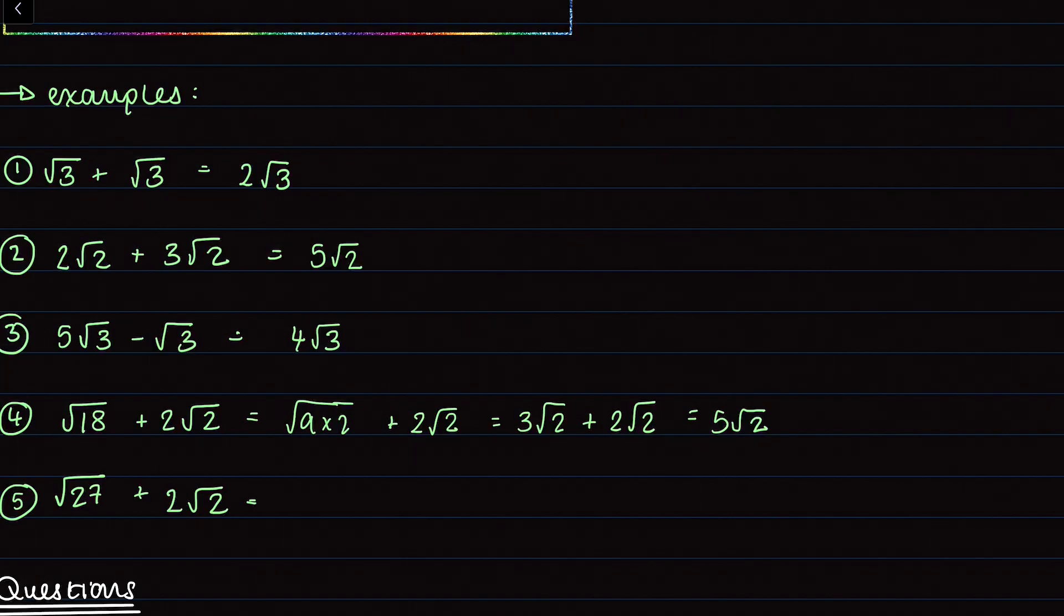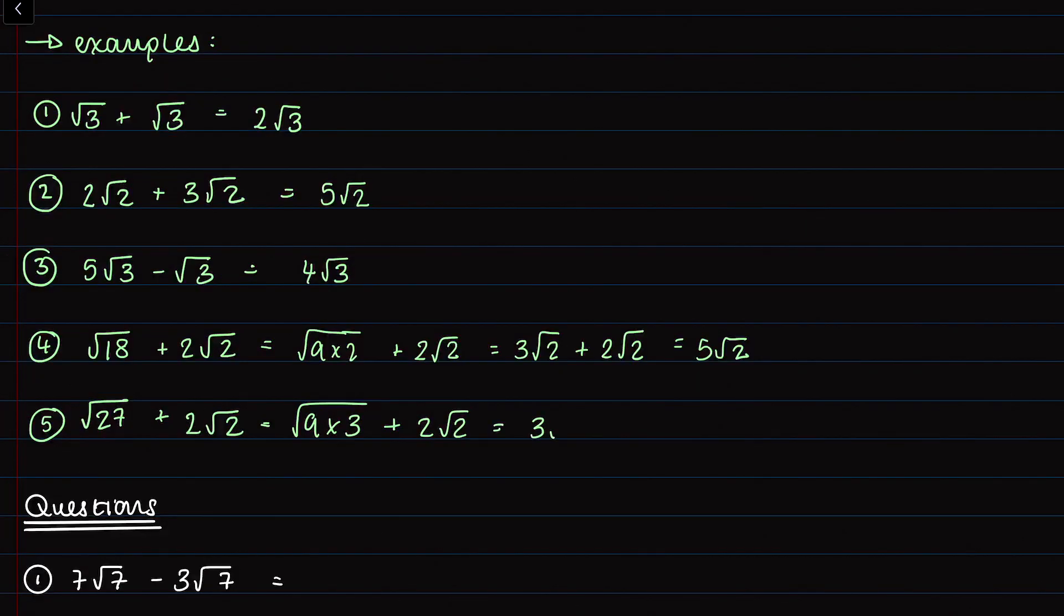Question 5 is a little bit trickier. I think it would be a good idea if you can to pause the video now and have a go at that yourself. But we'll go through it. So root 27, if I think about the factors of 27, I know that I have a square factor of 9. So I can change root 27 into the square root of 9 times 3. Simplify that further and I end up with 3 root 3 plus 2 root 2. I can't simplify that further because my surds are different. So it would be like having x and y.